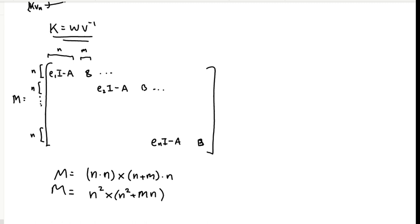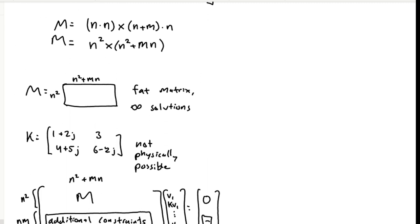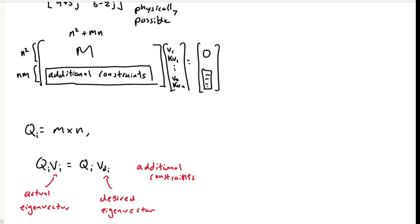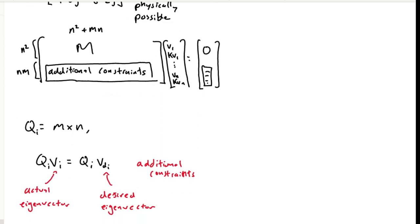Specifically speaking, there are N times M extra rows that we can add before we have a fully defined system of equations. So let's define another set of equations for every eigenvector. We're going to pick a matrix Q, which is going to be an M by N matrix, which is going to specify which components of the eigenvector we want to match, which components of our achieved eigenvector we want to match components of a desired eigenvector.